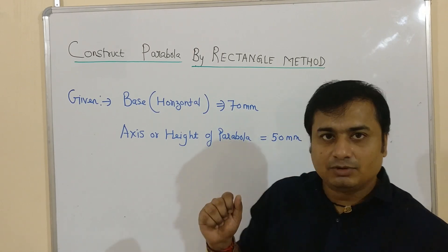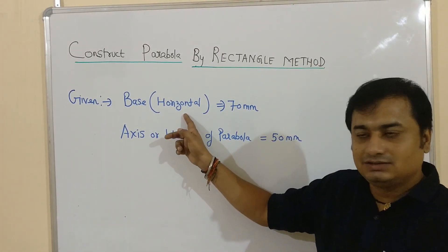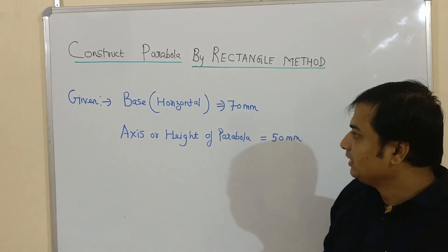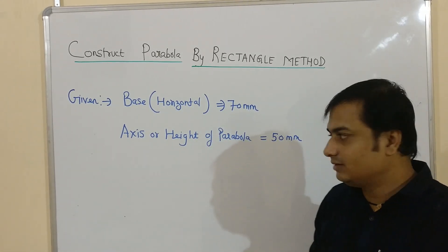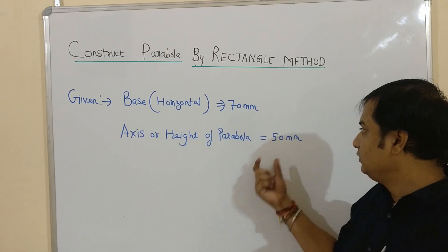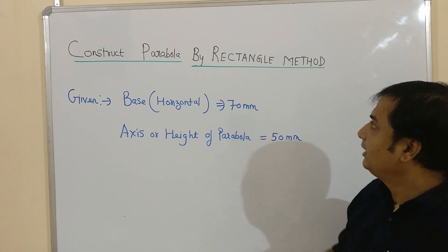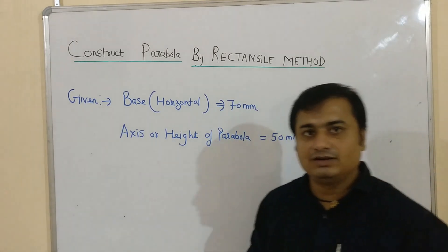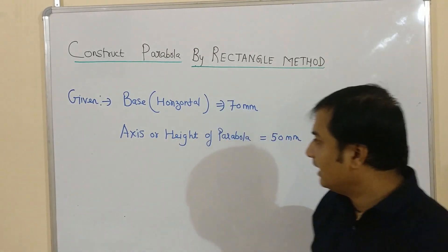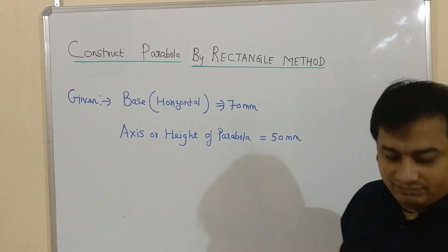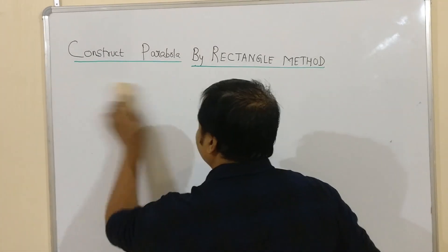It is given in the problem that the base, which is the horizontal axis, is 70 mm and the height or the vertical axis of the parabola is 50 mm. We have to construct the parabola using the rectangle method.